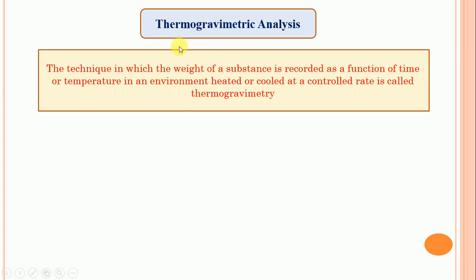In normal gravimetric analysis, we do precipitation, separation, washing, and drying. In thermogravimetry, high temperature is applied to the precipitate, causing removal of water and some volatile matters, and only the pure substance is obtained — that is known as thermogravimetric analysis.